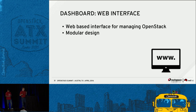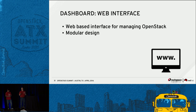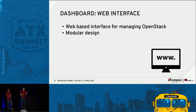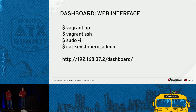Everything in OpenStack is built modular, and the Dashboard is no different. With almost 50 projects, the dashboard is committed to getting each of them to have web dashboard support. It has to be built modularly so that a new project coming online can say 'we're ready to have our web interface' and they drop in another module that integrates in. That makes it quick for more projects to be added to the dashboard.